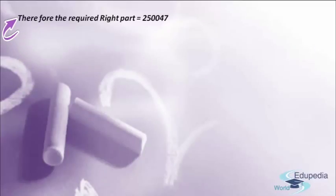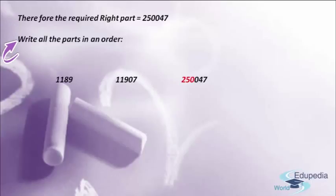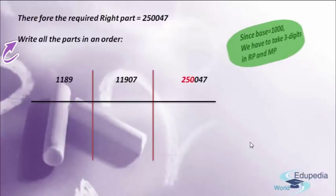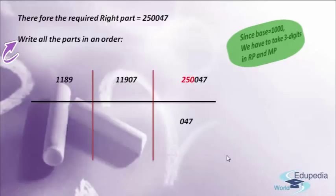After finding all the parts — the left part, the middle part and the right part — let us write all these parts in order. Since we are finding the cube of a 4-digit number using Yavadunam Sutra with base 1000, we must take 3 digits in the right part as well as in the middle part. The right part answer 250,047 is a 6-digit number, so we take the last 3 digits, 047, as our answer and send the remaining 250 as carry-on to the middle part. Adding 11907 with 250, we get 12157.